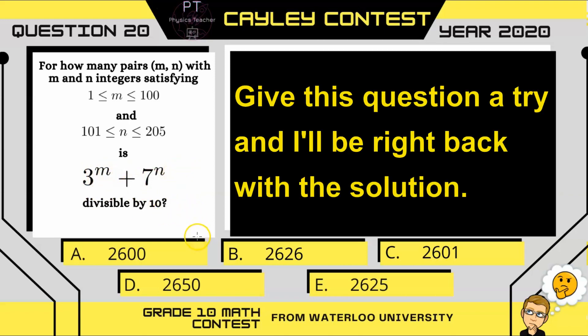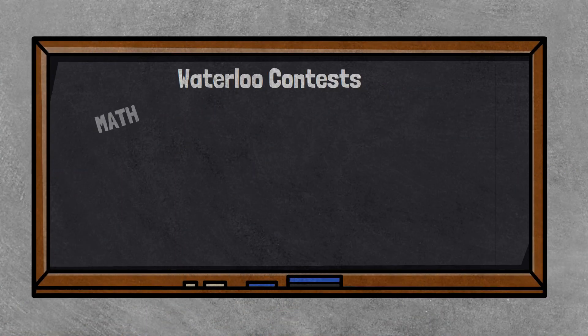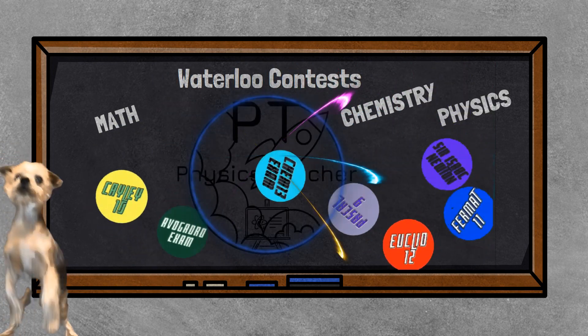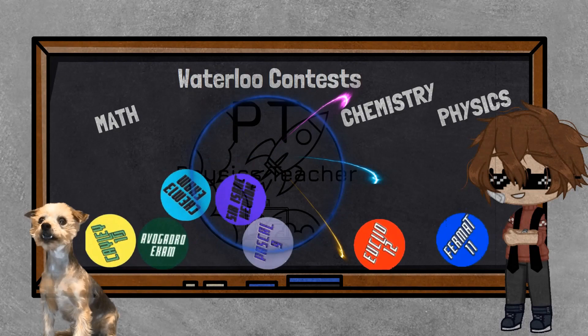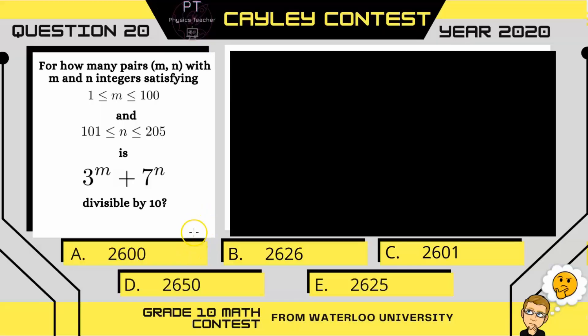Give it a try, and I'll be right back with the solution. Okay, so first, to figure out if anything is divisible by 10, you have to look at the ones digit. If the ones digit is a zero, then it's divisible by 10.